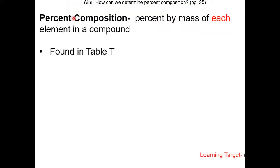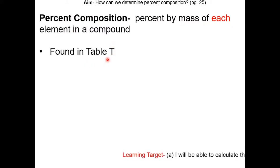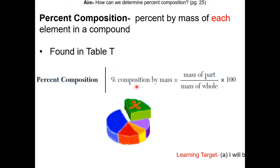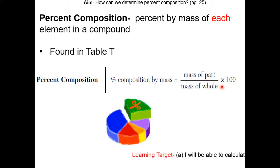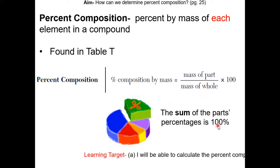In chemistry, percent composition is the percent by mass of each element in the compound. The equation can be found on Table T in your reference table. Percent composition by mass is equal to the mass of part over the mass of whole times 100. If you were to add up all the parts' percentages, it should be 100%.